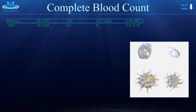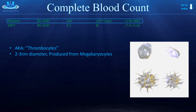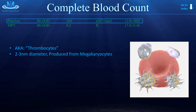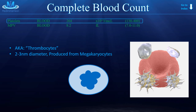Platelets are also referred to as thrombocytes, which is important later on when we talk about thrombocytosis or thrombocytopenia. They have a diameter of about 2 to 3 nanometers. To give you a visual reference, a red blood cell has a diameter of about 8 nanometers — a good ruler when looking at a microscope slide. Platelets are produced from megakaryocytes, which are large bone marrow cells with lobulated nuclei. Platelets are anuclear — they don't have a nucleus. They're formed by budding off as blebs from the cell membrane of megakaryocytes.